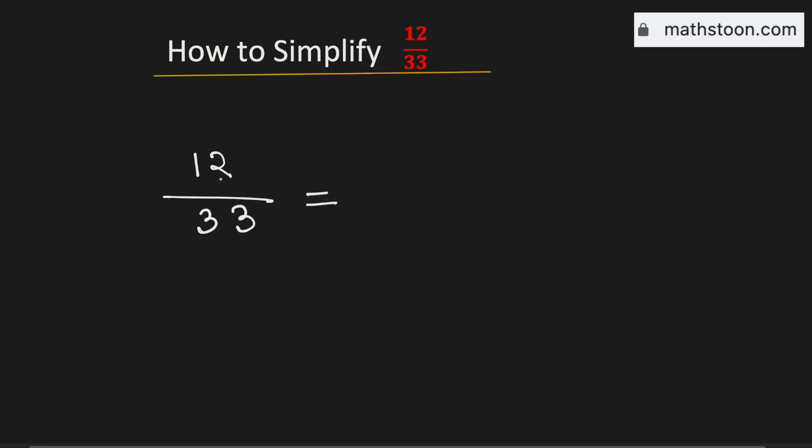We know that both the numbers are divisible by 3, so they can be written as a product of 3 and something.